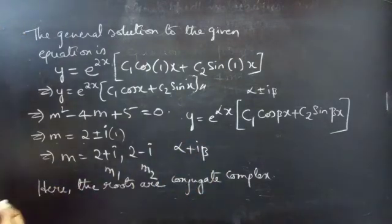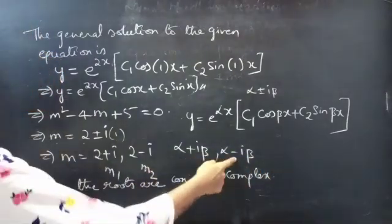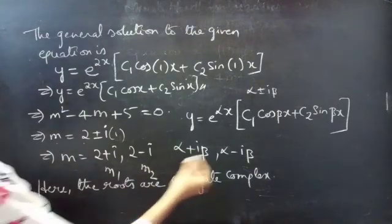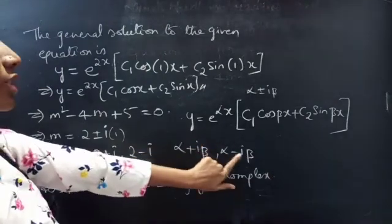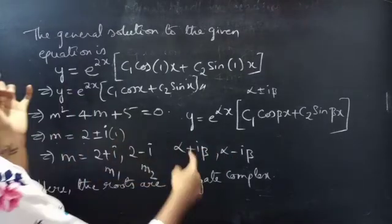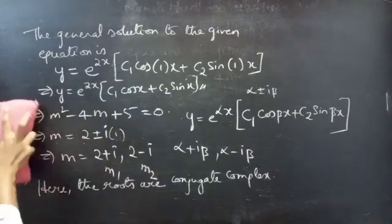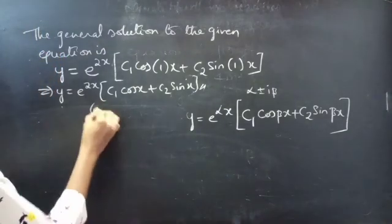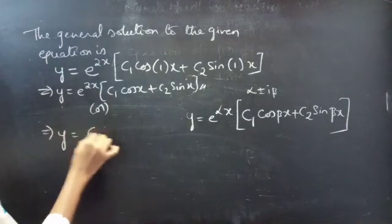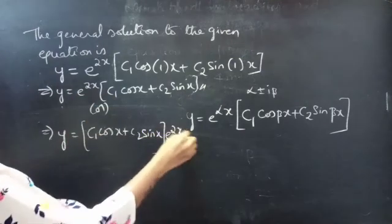If alpha plus i beta is a complex number, then its conjugate will be alpha minus i beta. So we call these two as conjugate complex roots. Also, if you have a complex number alpha minus i beta, then the conjugate is alpha plus i beta. We change the sign in the middle to get the conjugate.